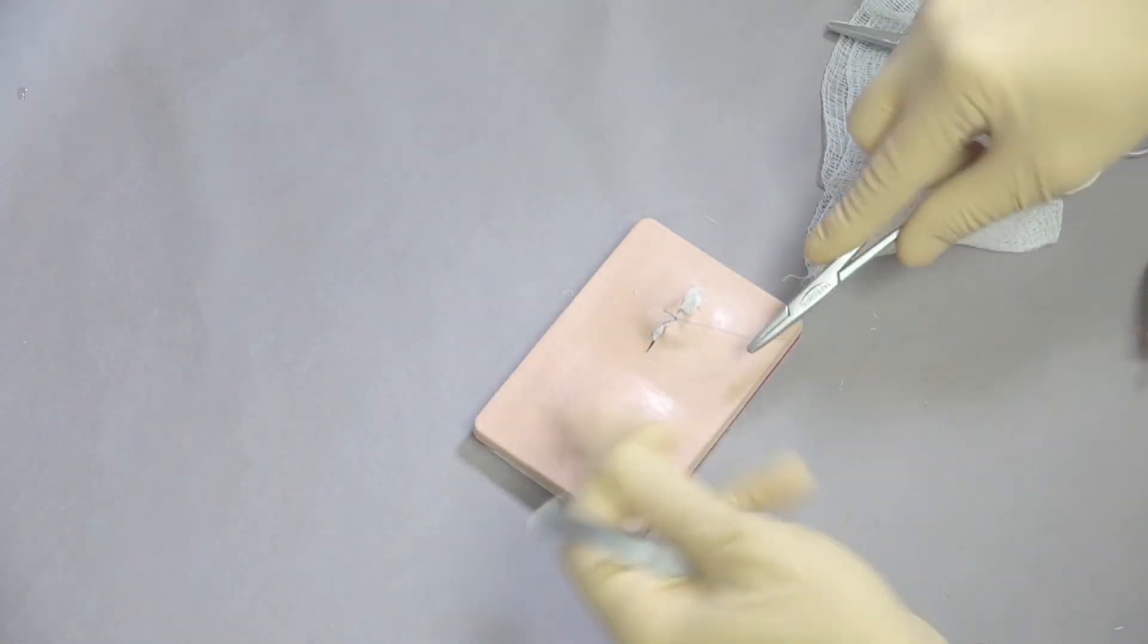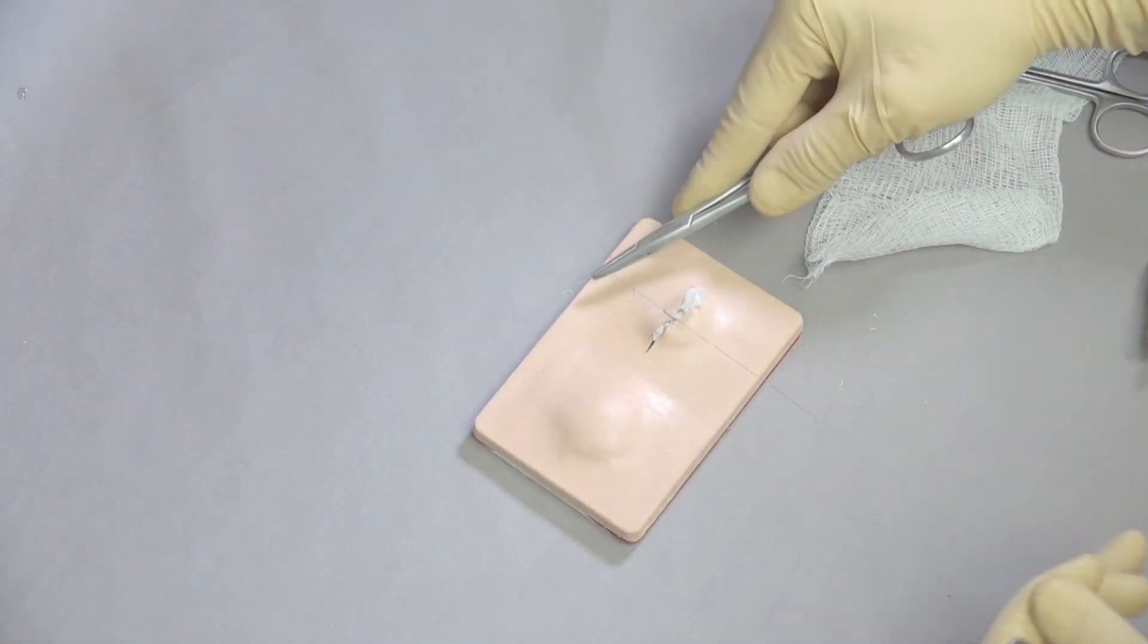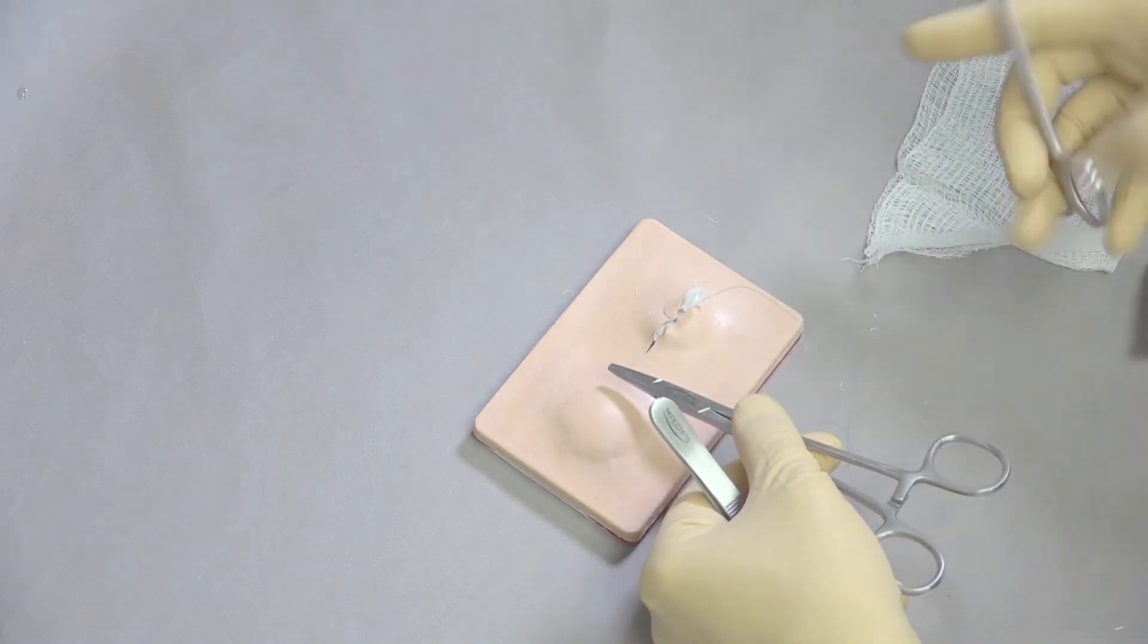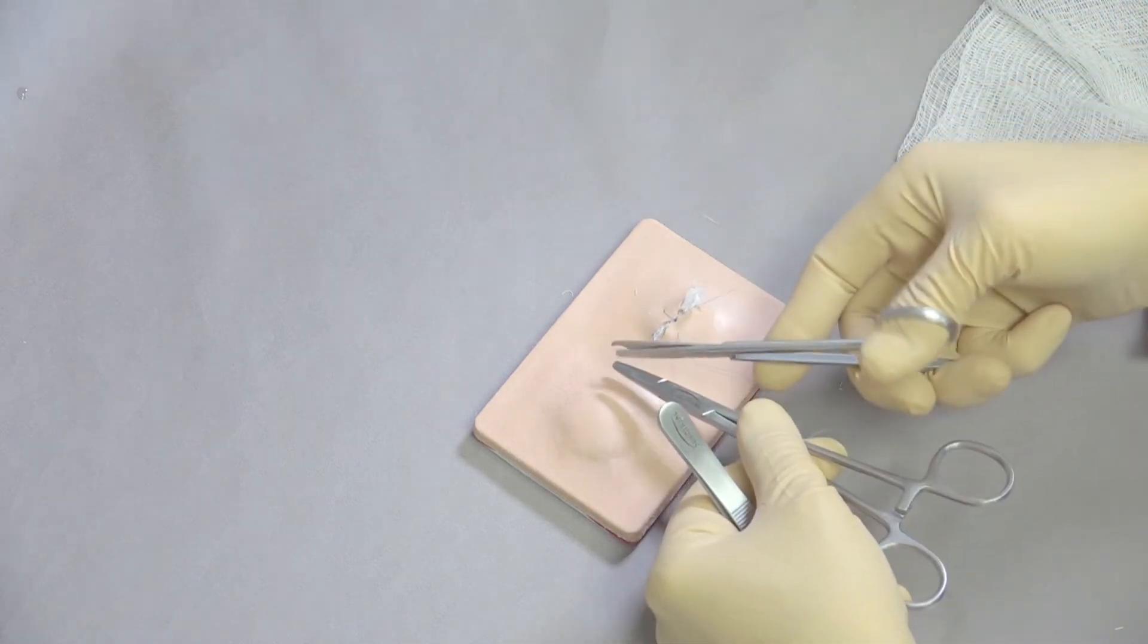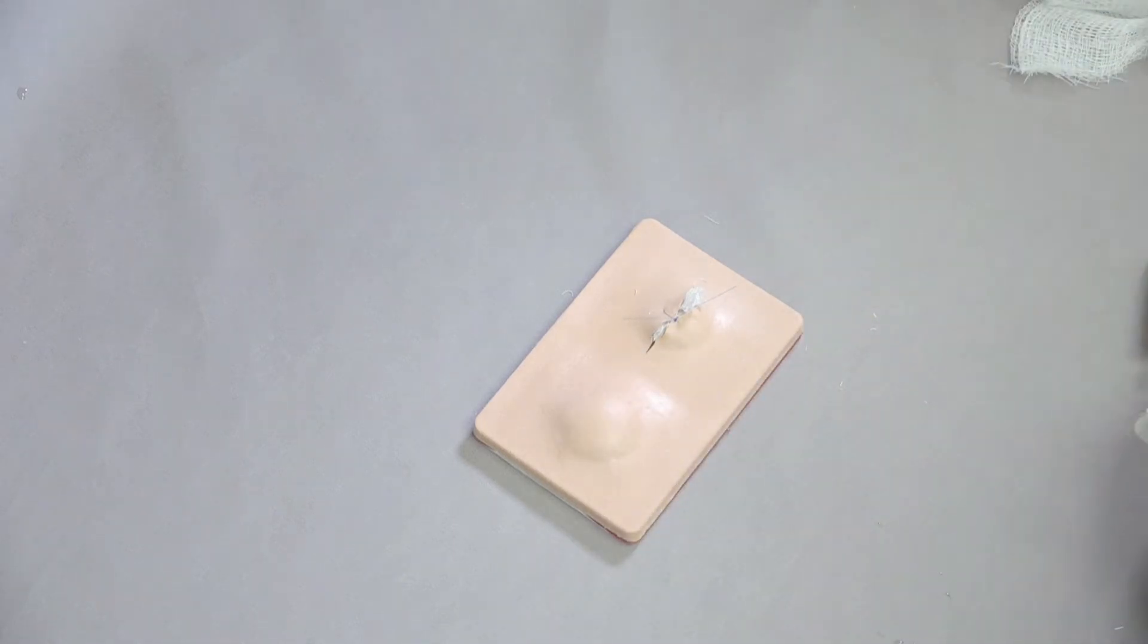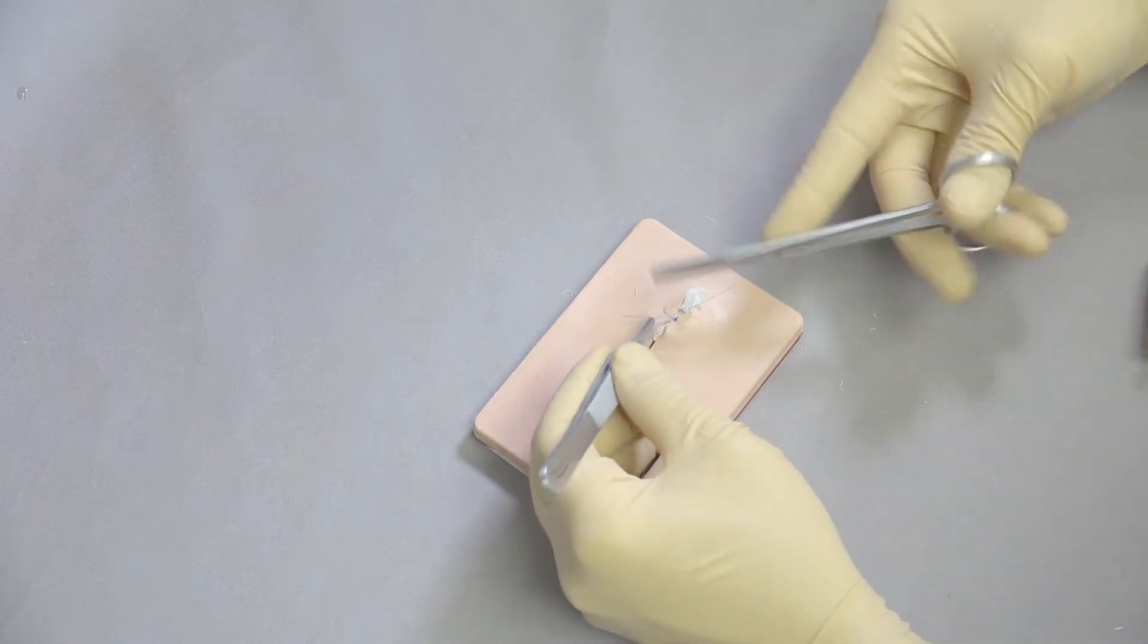So a four throw square knot. And then we'll leave the ends fairly long because we're going to come back and take that out later. So then the plan would be come back in a day, typically 24 hours or so. And then we could remove this suture.